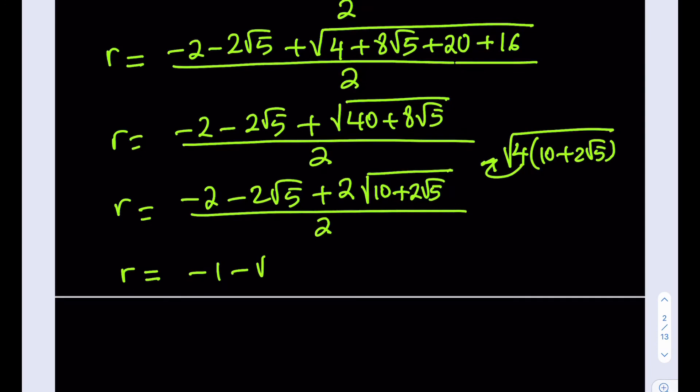Negative 1 minus root 5 plus square root of 10 plus 2 root 5. Unfortunately, there's no way to simplify this radical because 5 is not factorable in a way that the sum of the factors is going to equal to 10. That's why this is the simplest form of this expression. And that's the radius. Thank you for watching.